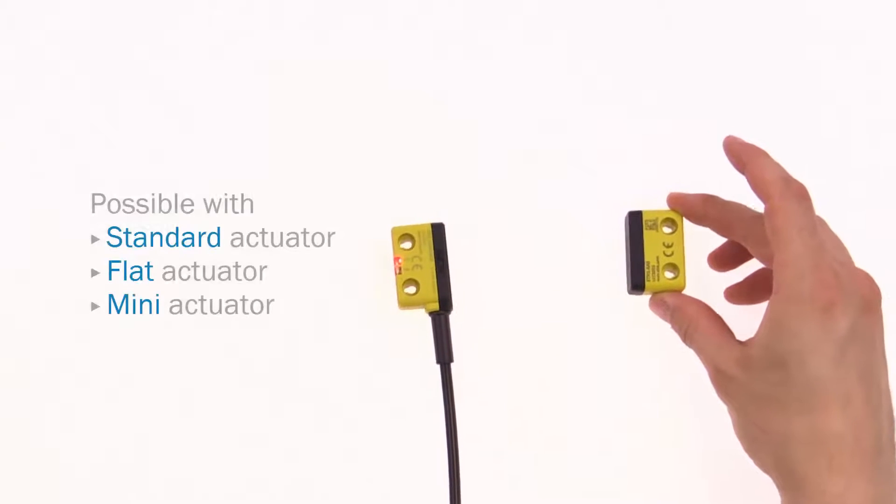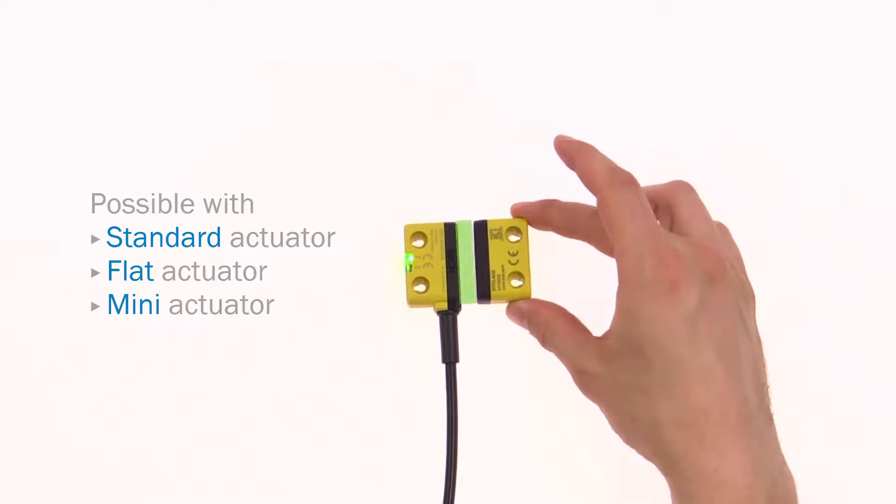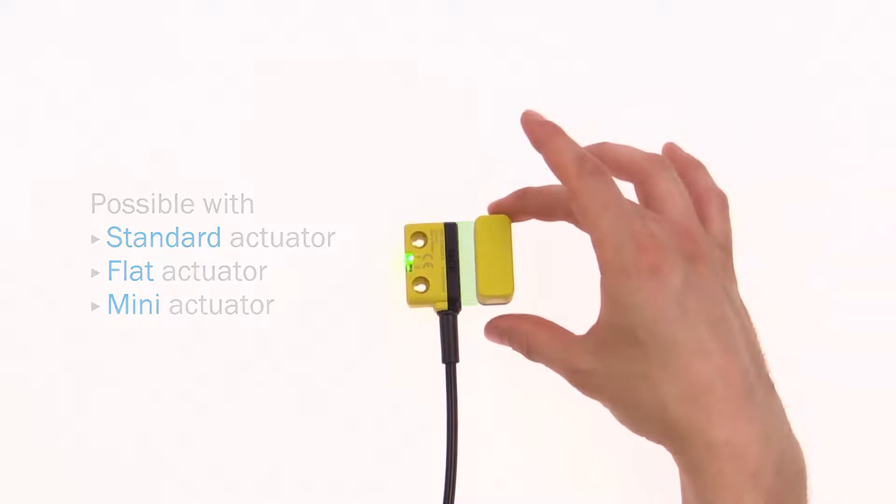Additionally, every actuator can be mounted in two positions, frontal to the sensing area or turned by 90 degrees to the sensing area.